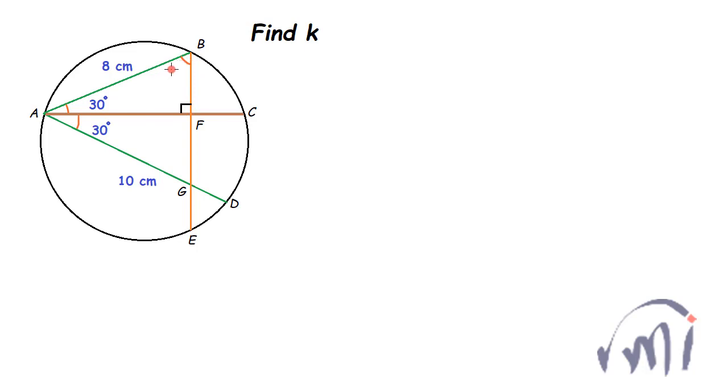That means this angle is 60 degrees. And similarly in triangle AFG, this angle is also 60 degrees. So now this triangle ABG is actually an equilateral triangle, that means all its sides are equal and that actually means AB is equal to BG is equal to AG and all of them are equal to 8 centimeters.